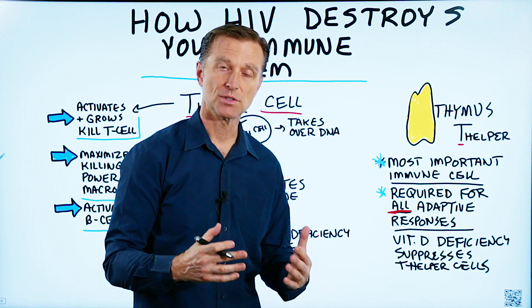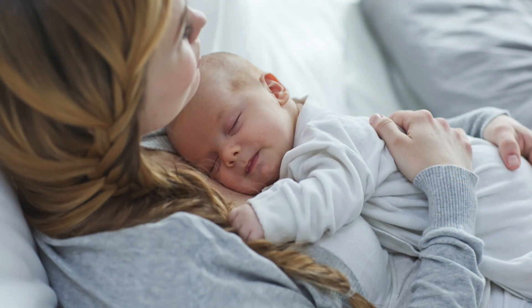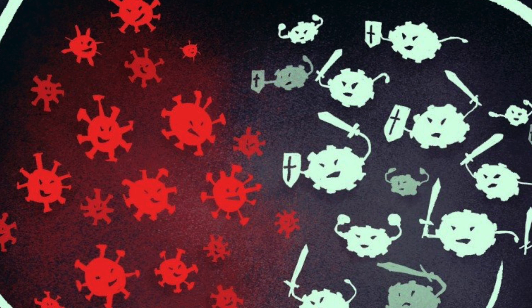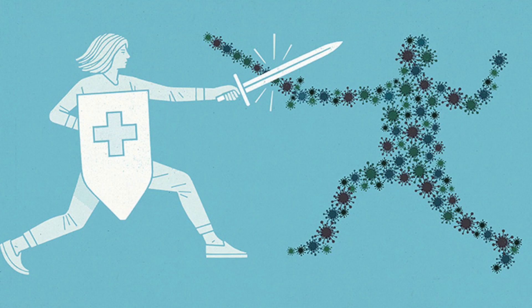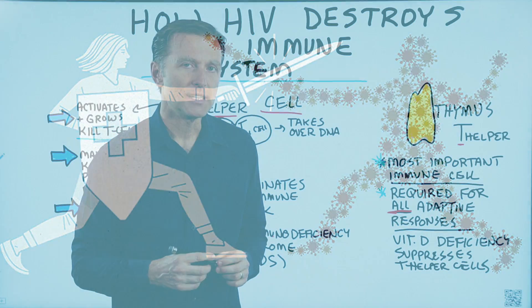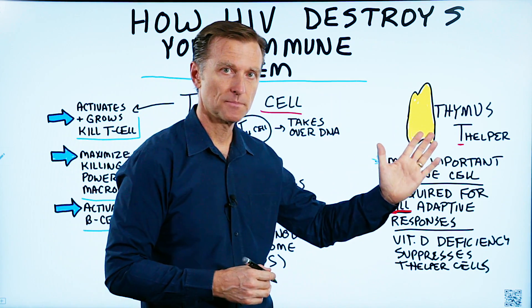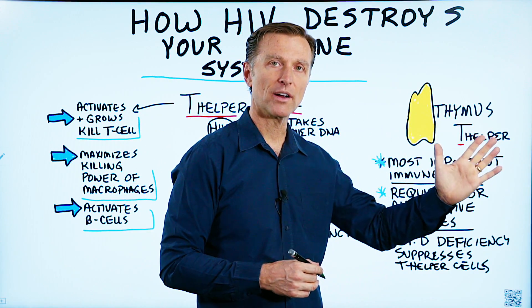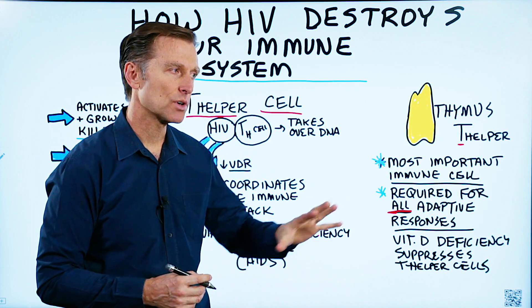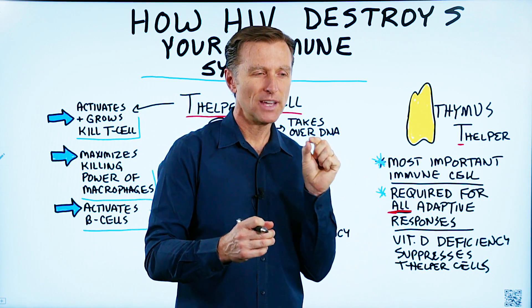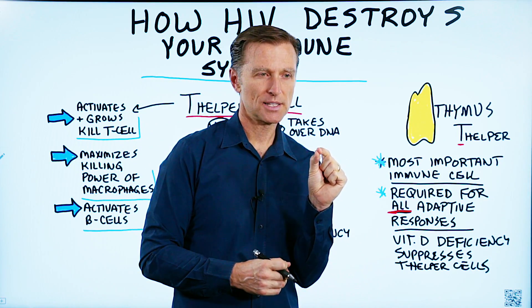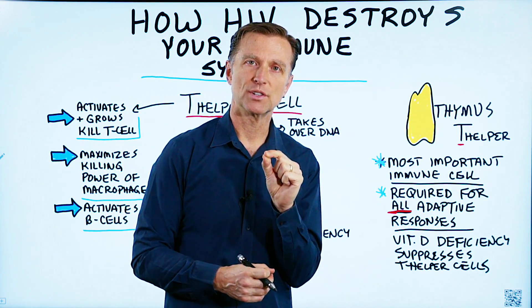What do I mean by adaptive responses? There are two parts of the immune system. You have the primal immune system, which you're born with, that knows what to do — it doesn't need any training and takes care of day-to-day defense. But when things get more threatening, you have another part called the adaptive or acquired immune system, which recruits additional, very specialized cells that do certain jobs.